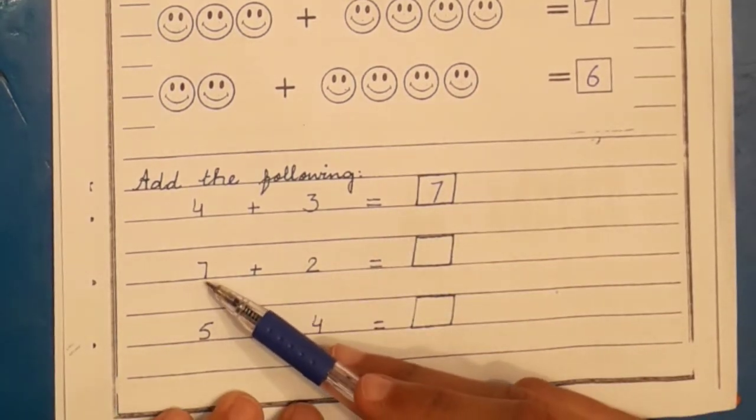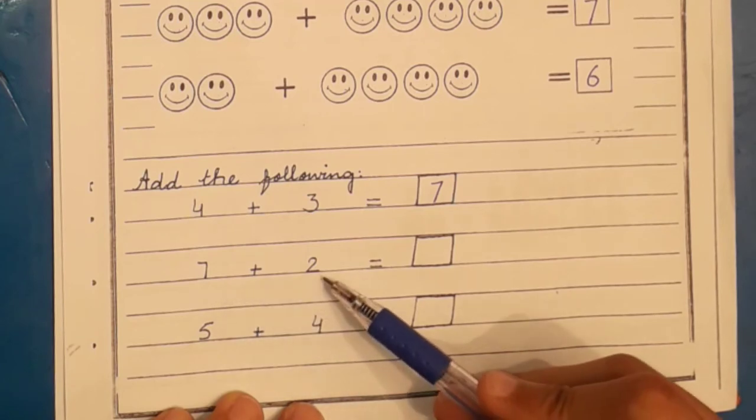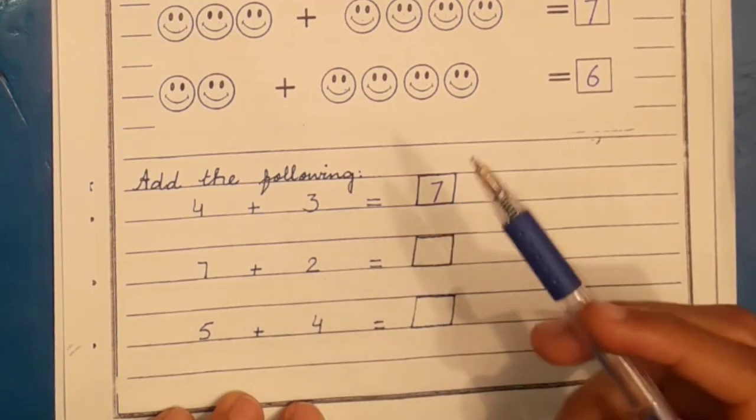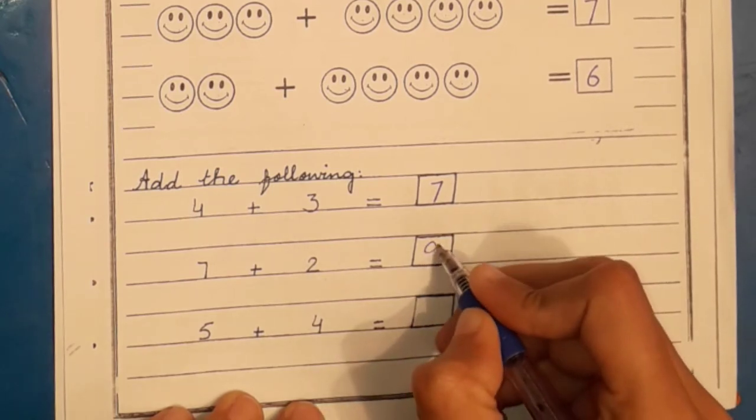Now next we have seven plus two. What do we have to add in seven? Two. So we will add seven to the next two numbers. Eight, nine. So the answer is nine.